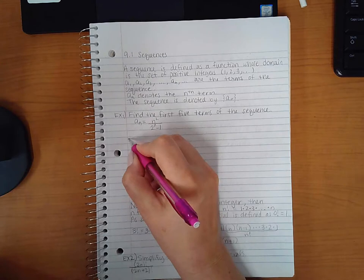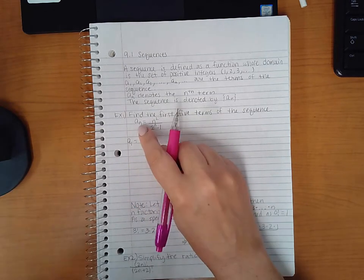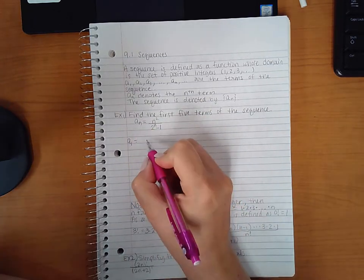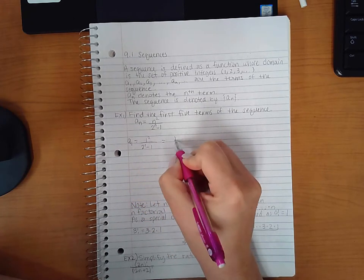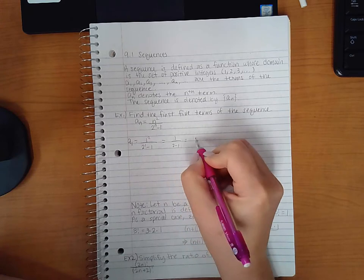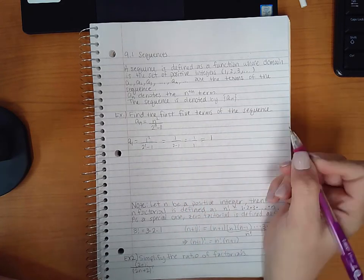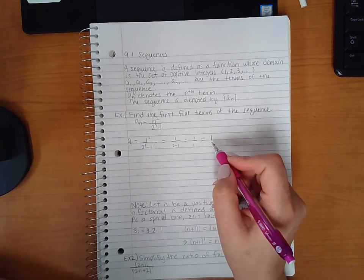So if I want to find the first term, that means that my n is 1. So I'm going to plug in 1 for n. So we get 1 as the first term of the sequence.